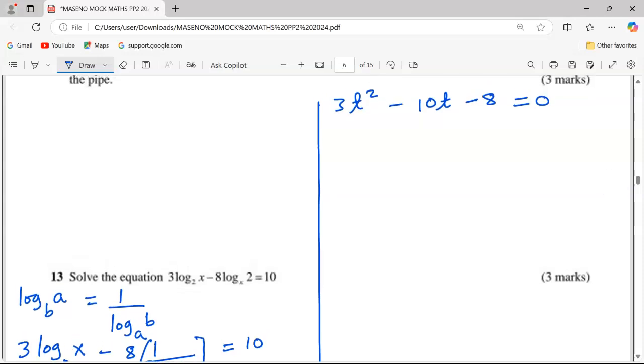Now at this point, we can solve it using any of several methods. Allow me to apply the factorization method, whereby I need a product of a times c, which is 3 by -8, so -24, and a sum equivalent to the value of b, which is -10.